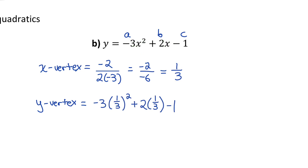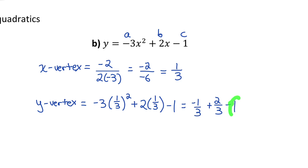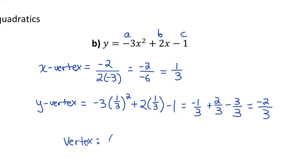When evaluating this, I have 1/3 squared — that's 1/9 — times negative 3, giving negative 3/9, plus 2 times 1/3, that's 2/3, minus 1. Negative 3/9 reduces to negative 1/3, and I rewrite 1 as 3/3. Now with a common denominator, negative 1 plus 2 is 1, minus 3 is negative 2. So the y-coordinate of the vertex is negative 2/3, which means the vertex is the point (1/3, negative 2/3).